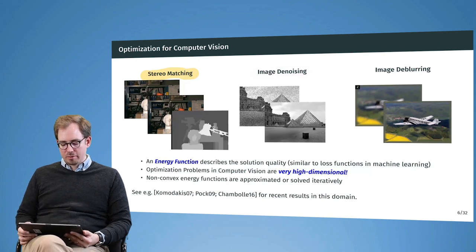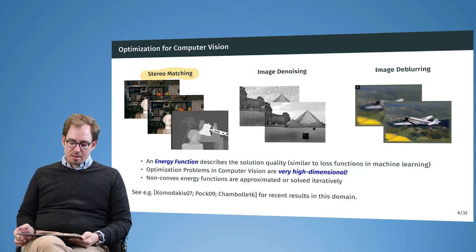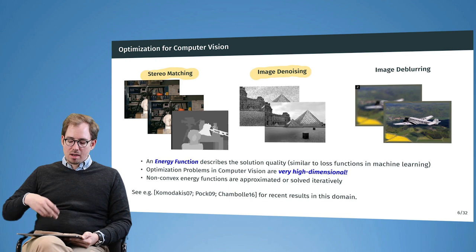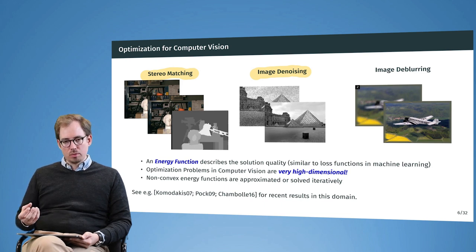This is a very famous example called Tsukuba from Japan. Another example is image denoising. In a similar way we can construct an energy function, minimize that, and then recover an image that is denoised, that resembles more closely to what we expect to be the ground truth behind the noisy image. Then the last example is image deblurring.